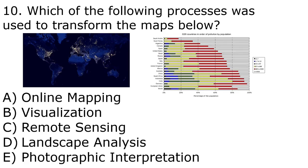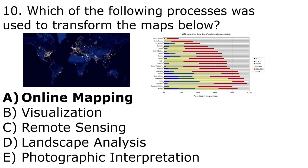Using the two previous stimuli, the correct answer is A, online mapping. We took an image and put it into a map or graph — that is online mapping. Visualization would apply if we drew the map ourselves to match the area. It wouldn't be remote sensing because there's only one satellite image. Landscape analysis or photographic interpretation would need a descriptive statement about the amount of light pollution shown.